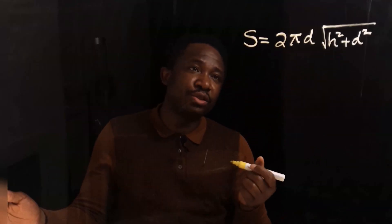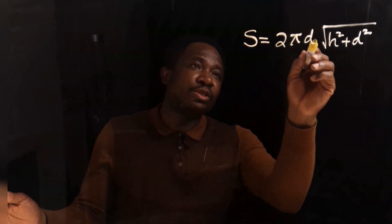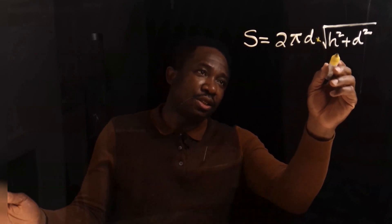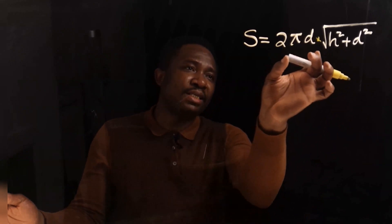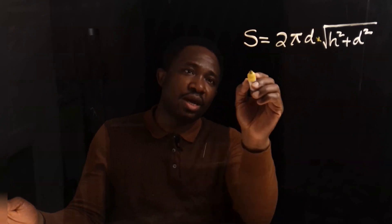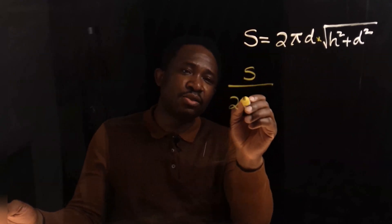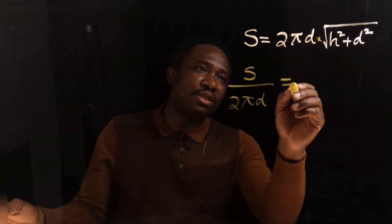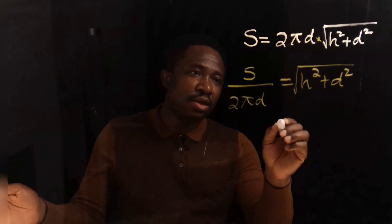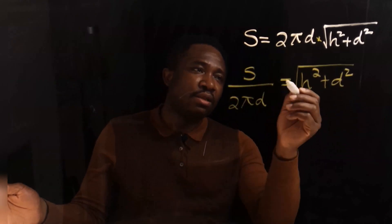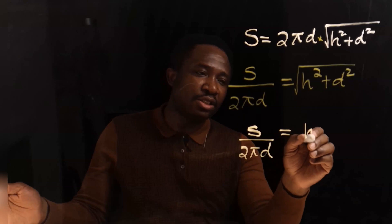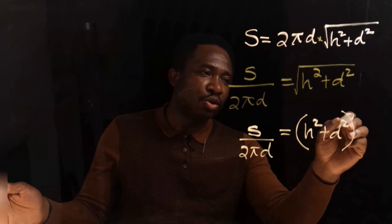Let's consider this equation: S equals 2 pi D multiplied by the square root of H squared plus D squared. We want to make H the subject. The first thing we're going to do is take 2 pi D across the equal sign — since it's multiplying, it will divide. So S over 2 pi D equals the square root of H squared plus D squared. We can rewrite the square root as H squared plus D squared all to the power of 1 over 2.